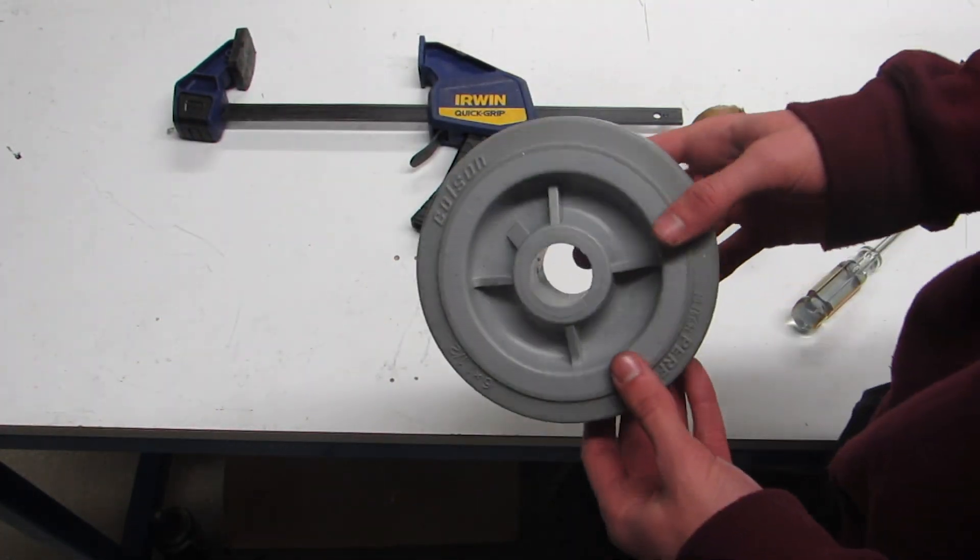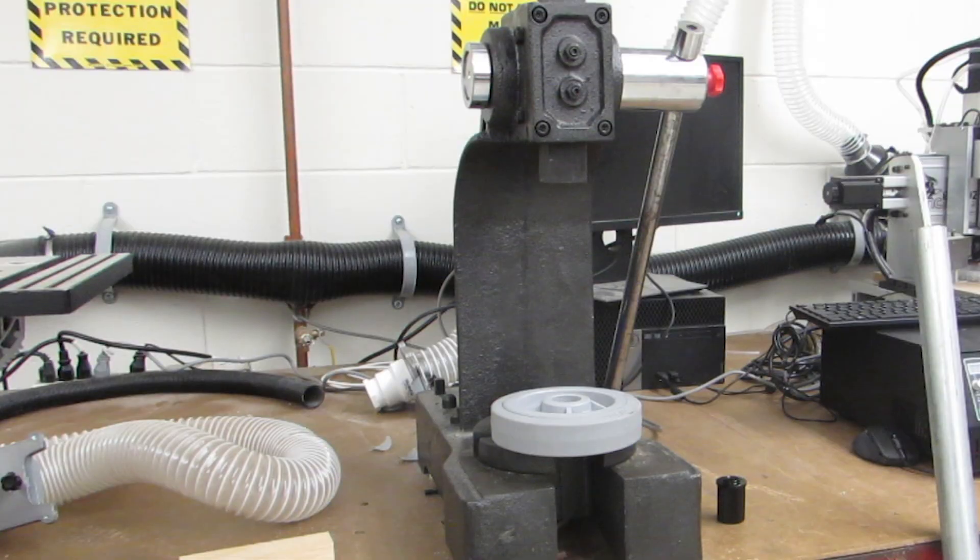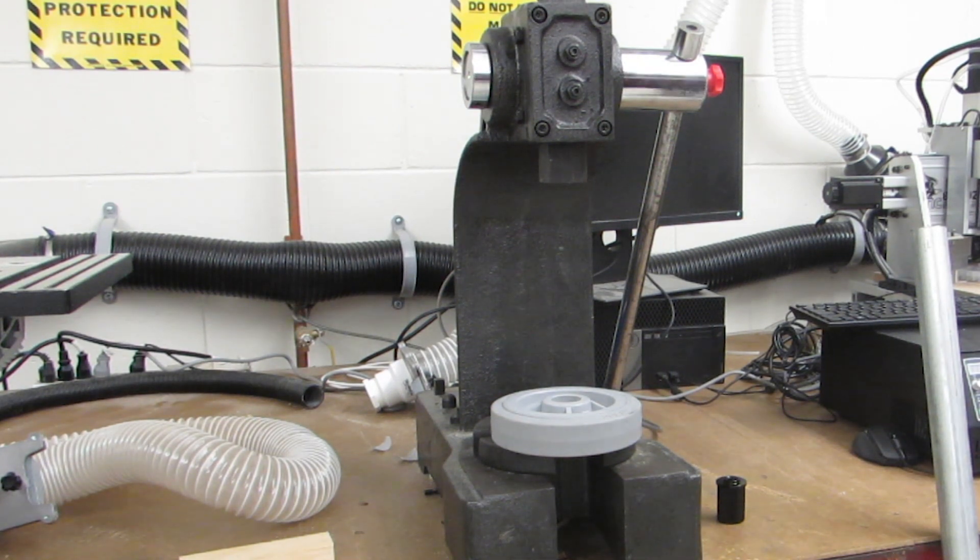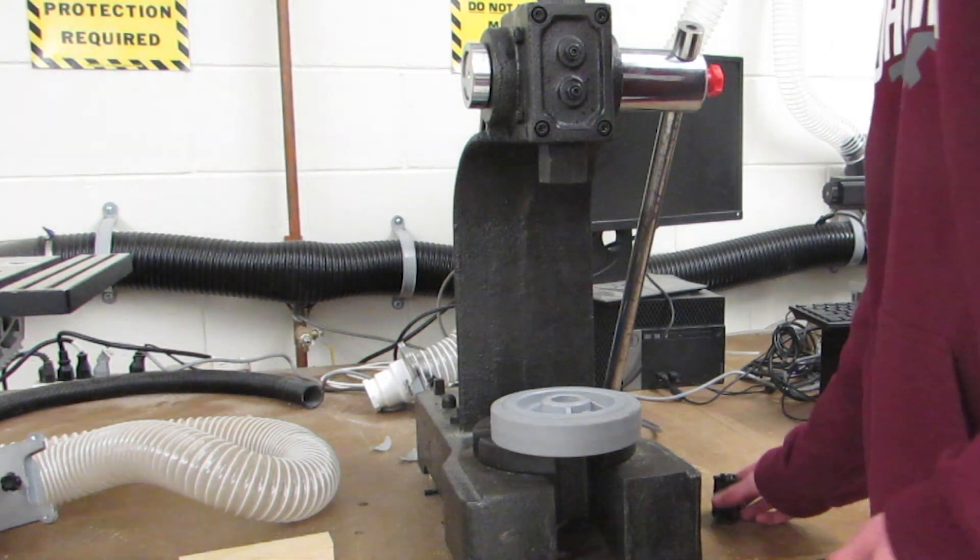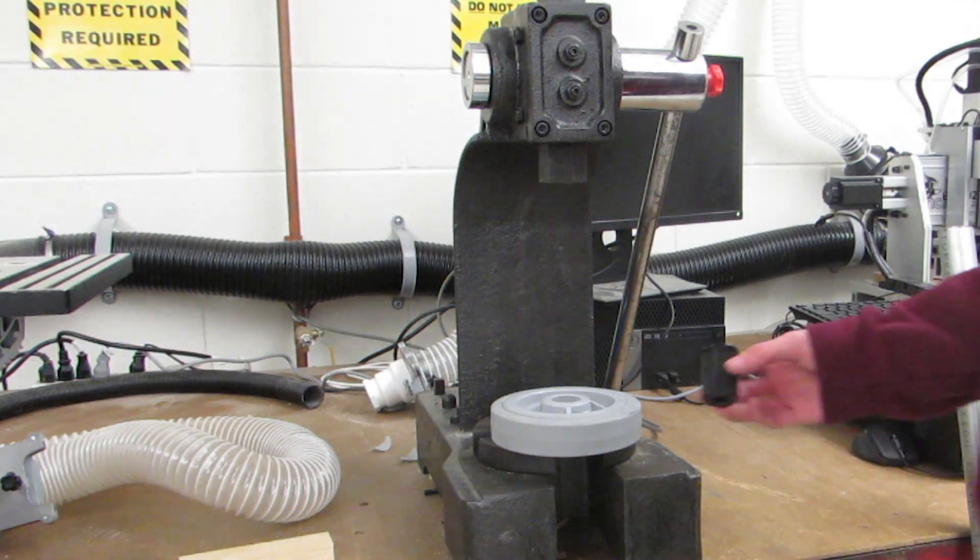And now we have our hull ready to get filled with a hub. Now that we have our Colson ready to be filled with a hub, we can head over to the arbor press to force the hub into the center of the wheel.